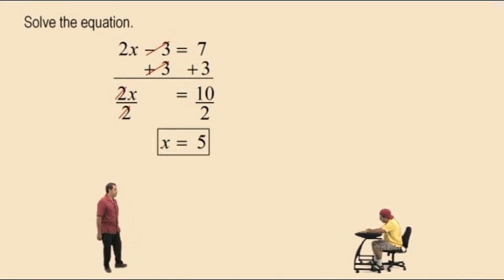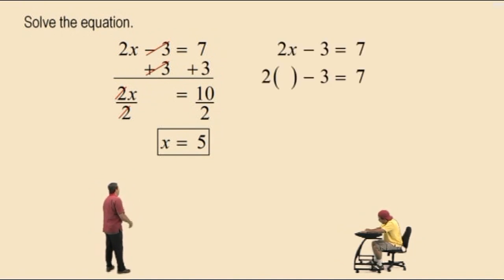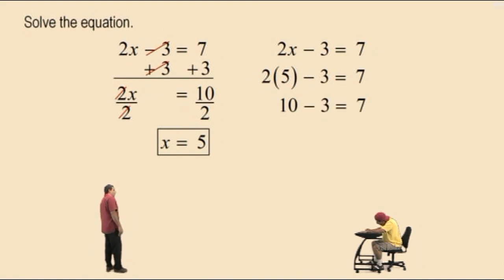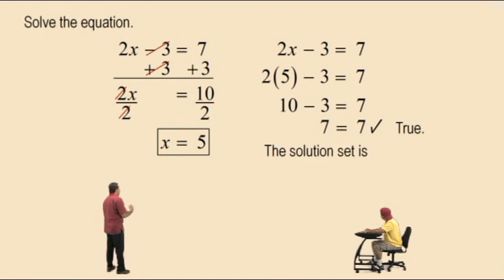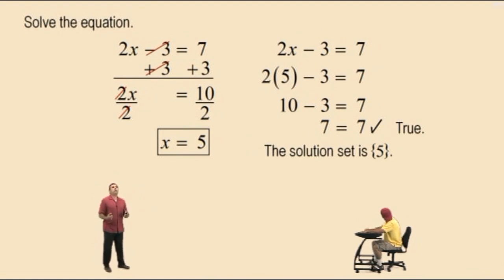Now again, to verify your solution is correct, we take our original equation, substitute the x with a 5, and follow your order of operations. Remember, you must do the multiplication before you do the subtraction. 2 times 5 is 10. 10 subtract 3 equals 7. And so our answer is 7 equals 7, which is true. Now since our final statement was true, then we say that the solution set to this equation is confirmed. We don't have time in this video to check every single solution, so you should do that on your own and you should end up with a true statement.